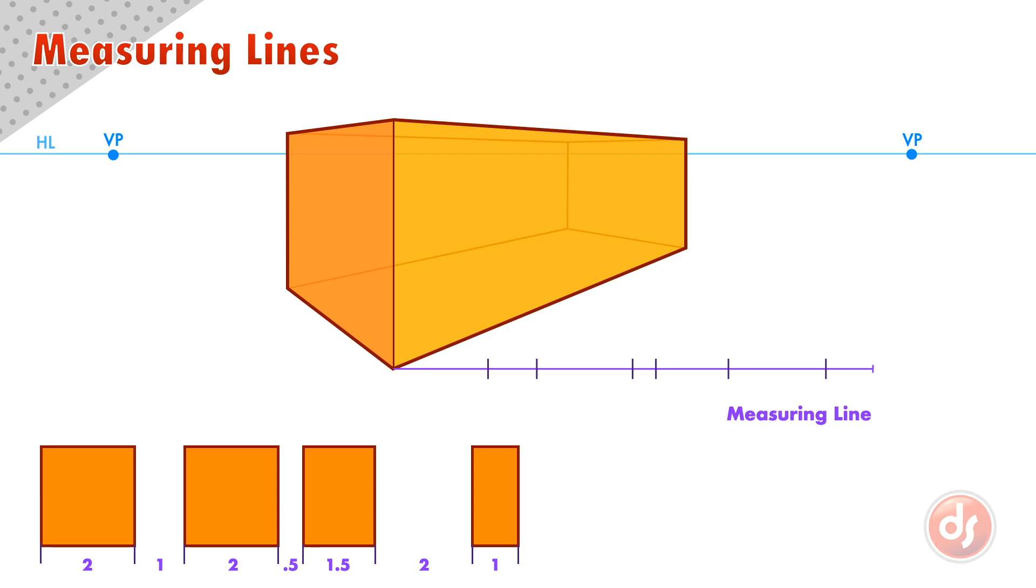Next, we draw a new line from the end of our measuring line through the opposite corner of our box, all the way to the horizon line. This gives us a special vanishing point we call a measuring point.